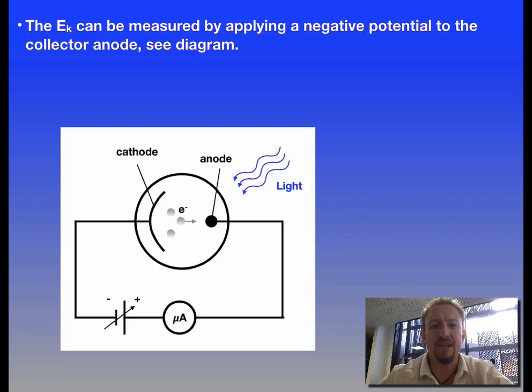If we look at the diagram below we can see that our photoelectric cell is present with our cathode and anode in our evacuated glass tube. There is a microammeter which is going to measure the current and we've also got a variable power supply.